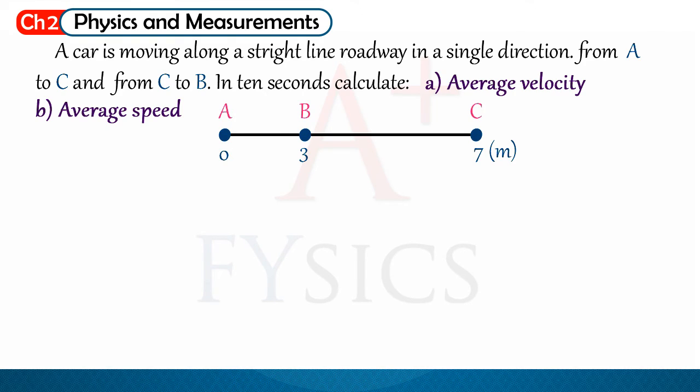We have an example. So, we have a car that moved in a straight line from A to C, then from C to B in a time of 10 seconds. The first part of the question is to calculate the average velocity.